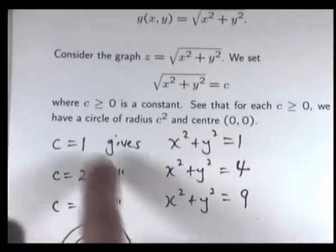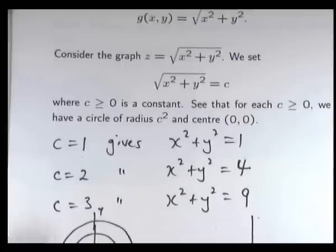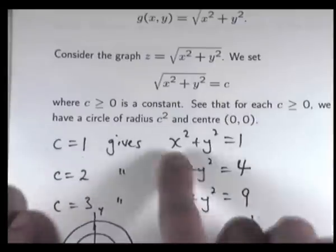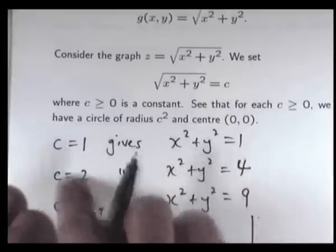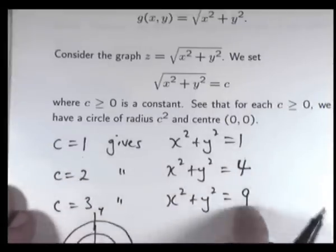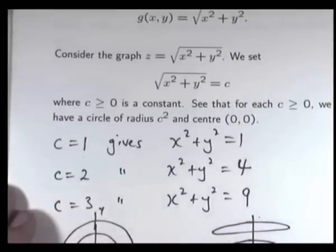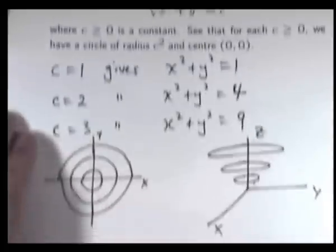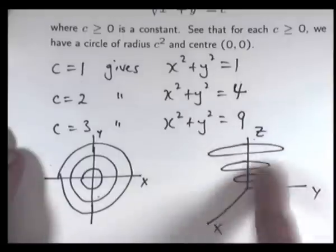But here the C values are the heights above or below the XY plane. So this circle lies one unit above the XY plane, this one lies two units above, and this one lies three units above. These are the level curves and these are the contour curves.